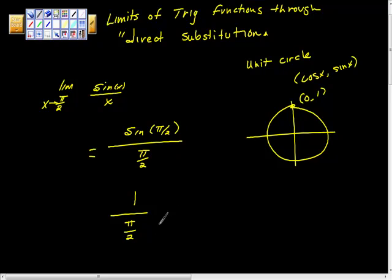Here we have a complex fraction, so we're going to bring this up and multiply by its reciprocal. So the limit of sine of x over x, as x approaches pi halves, is equal to 2 over pi, direct substitution.